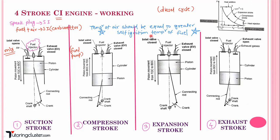The fuel is self-ignited. During the compression stroke, the inlet and exhaust valves are closed and the piston moves from bottom dead center to top dead center, compressing the air so that its temperature becomes greater than or equal to the self-ignition temperature of the fuel. At the end of the compression stroke, the fuel is injected by the fuel injector and heat addition takes place at constant volume.